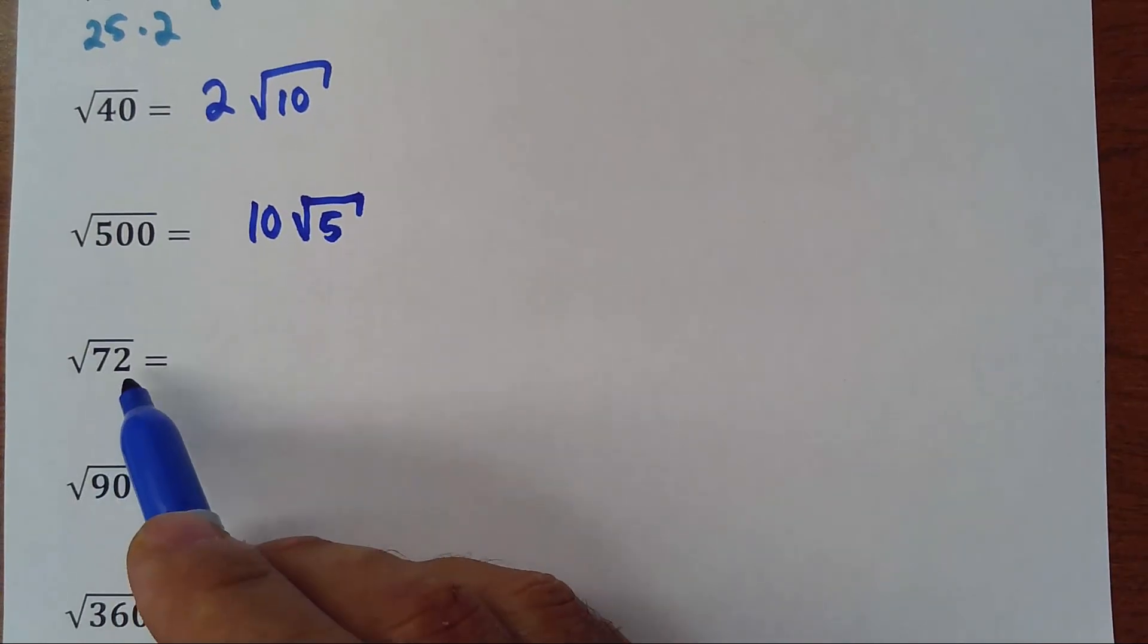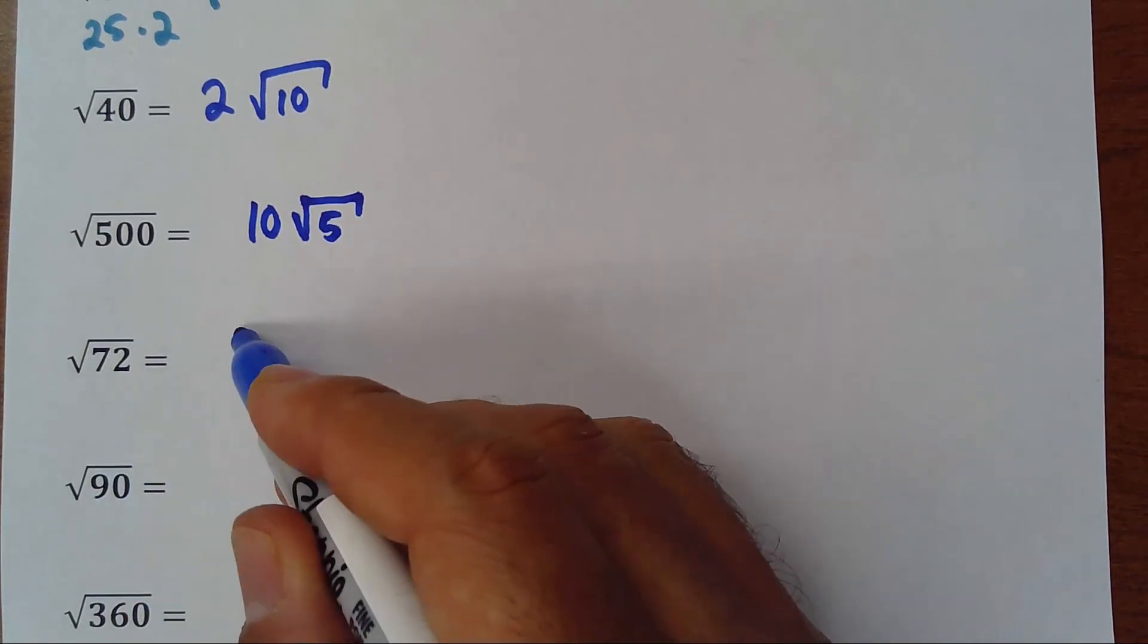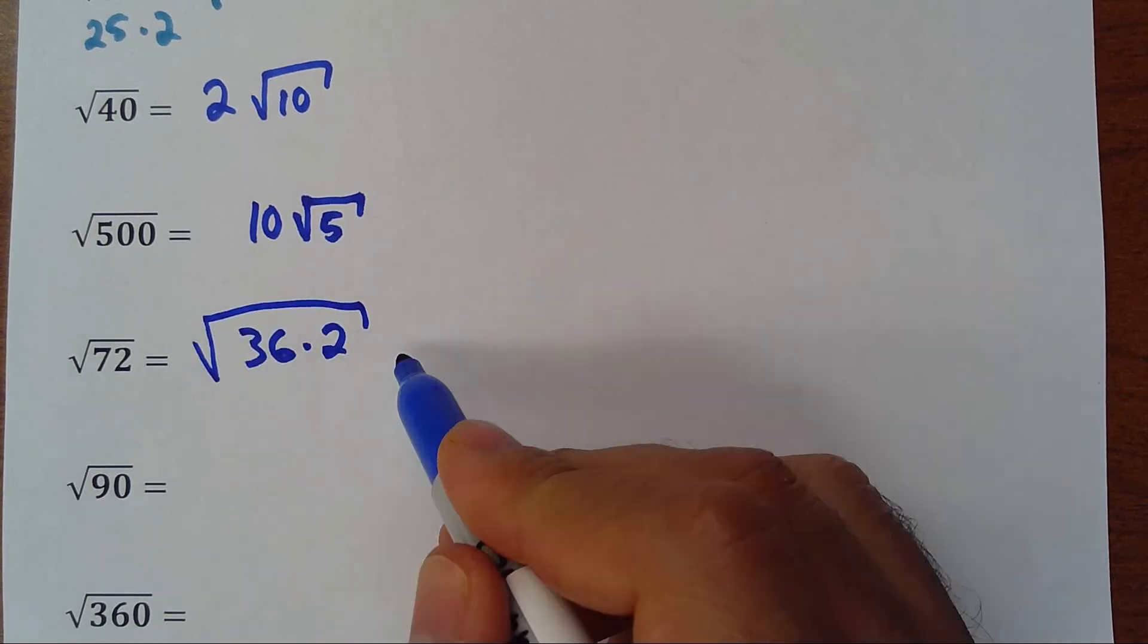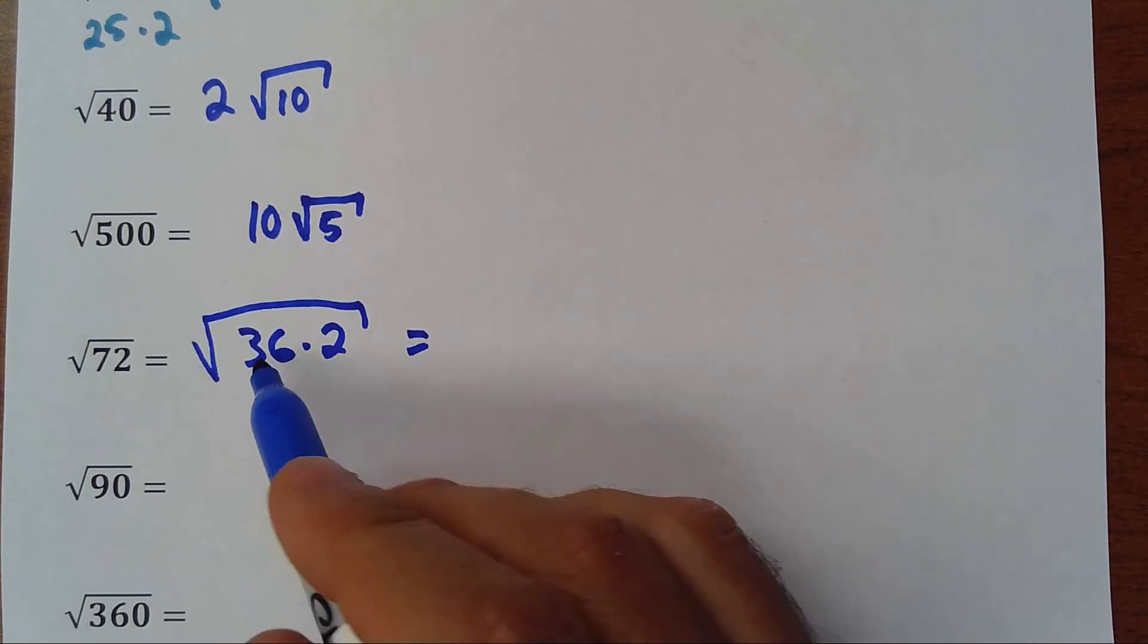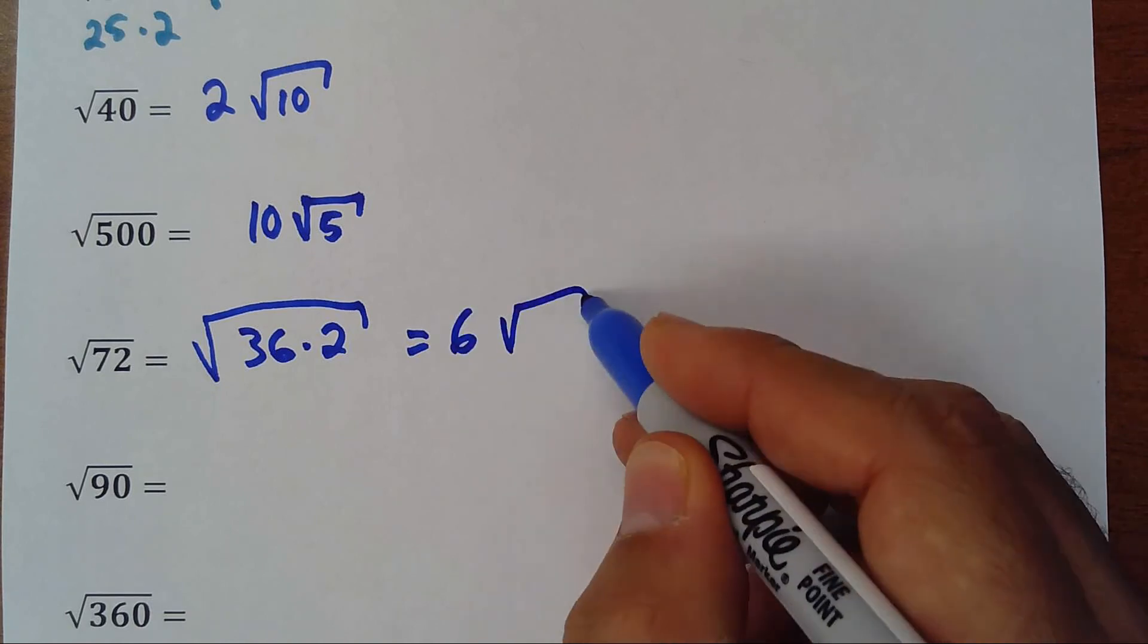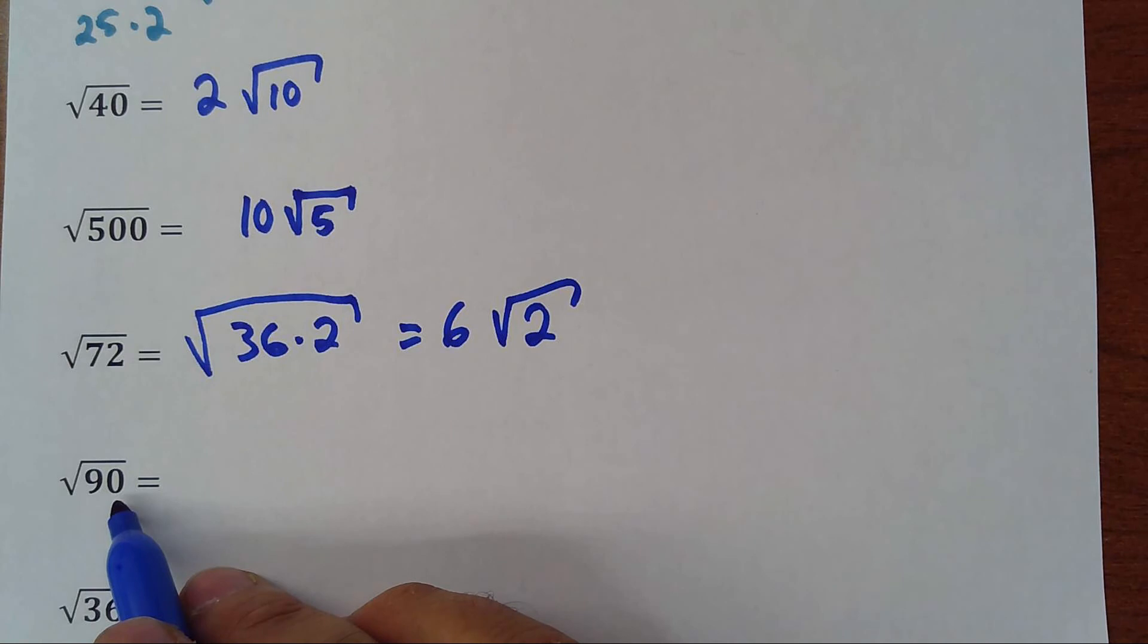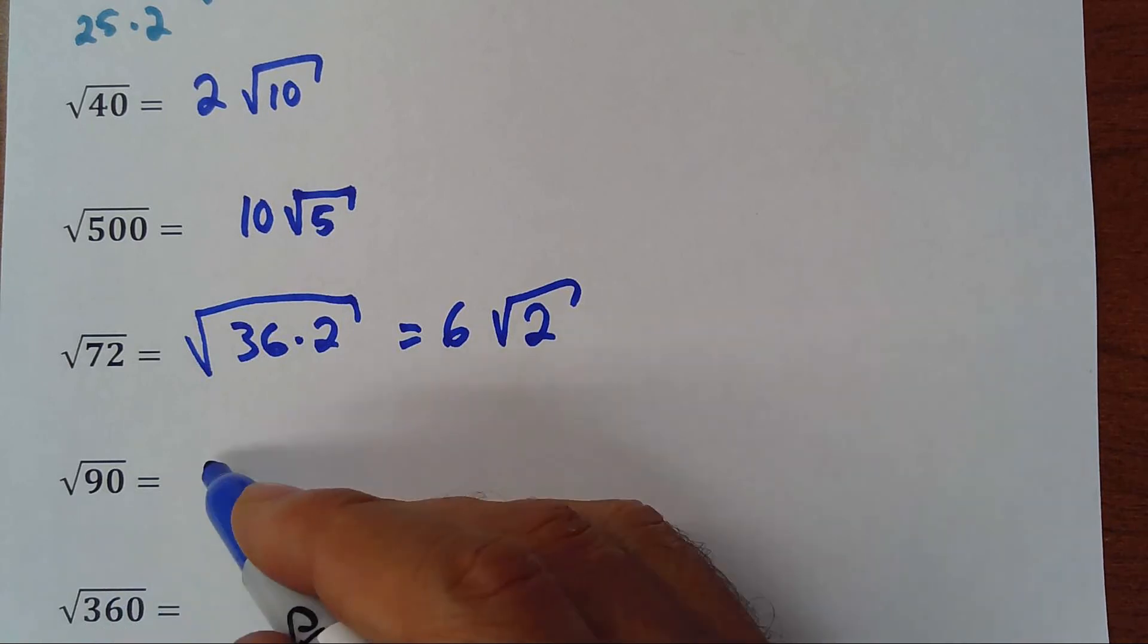So 72 is 36 times 2, and 36 is 6 squared, so 6 squared, 6 goes outside, square root of 2. 90 is 9 times 10, and 9 is 3 squared, so it will be 3 square root of 10.